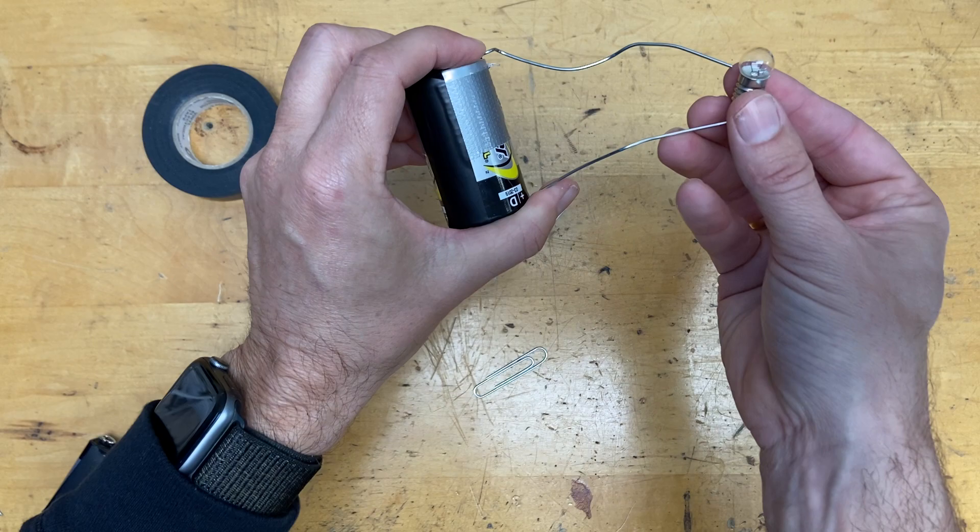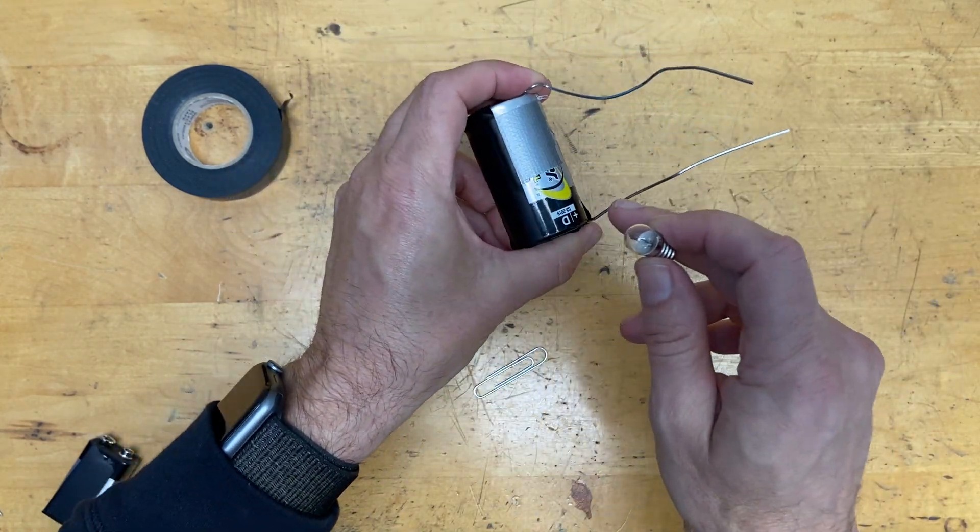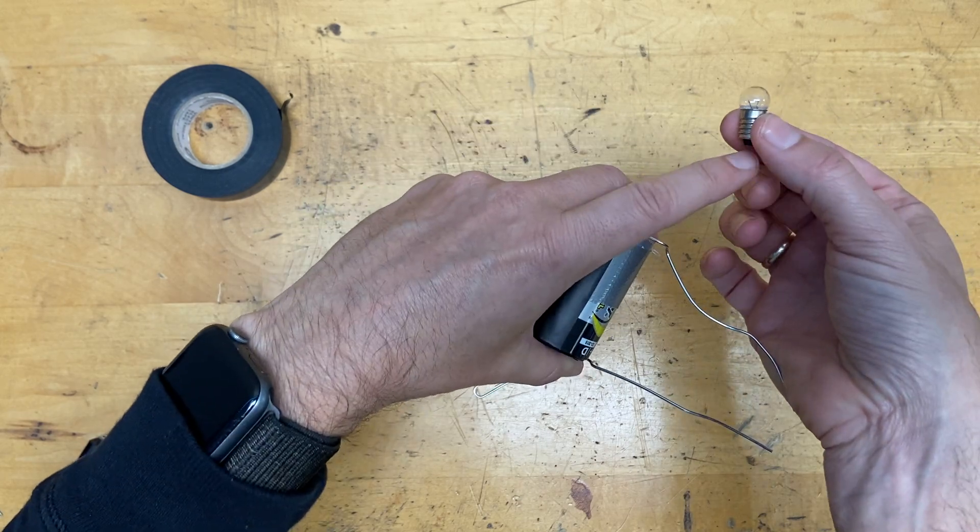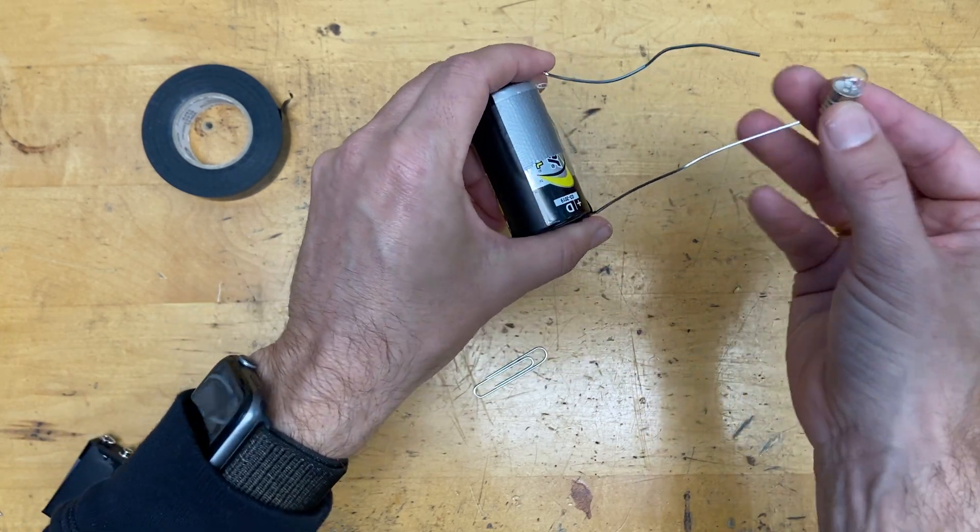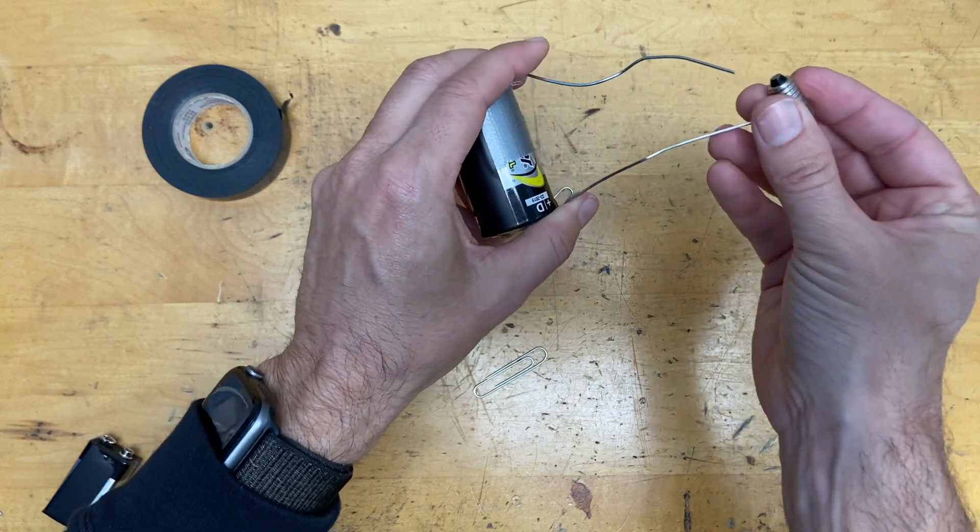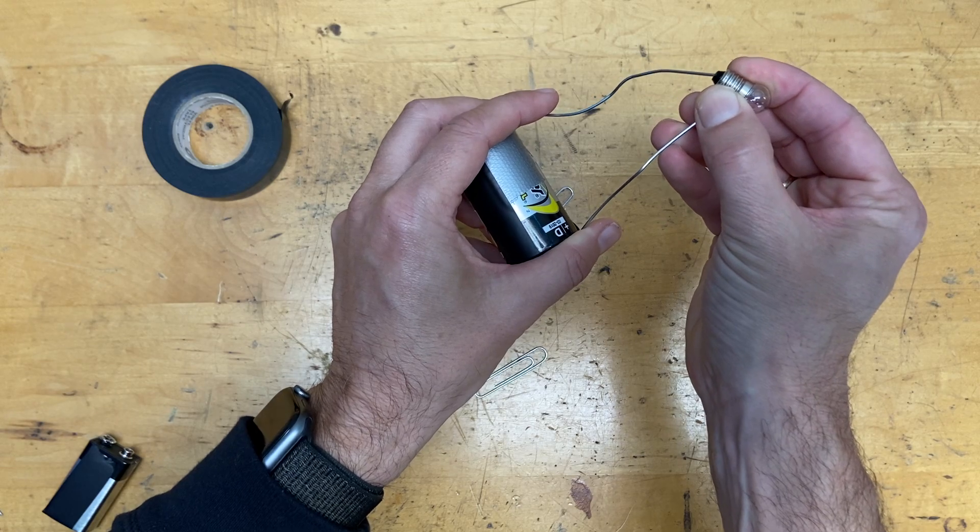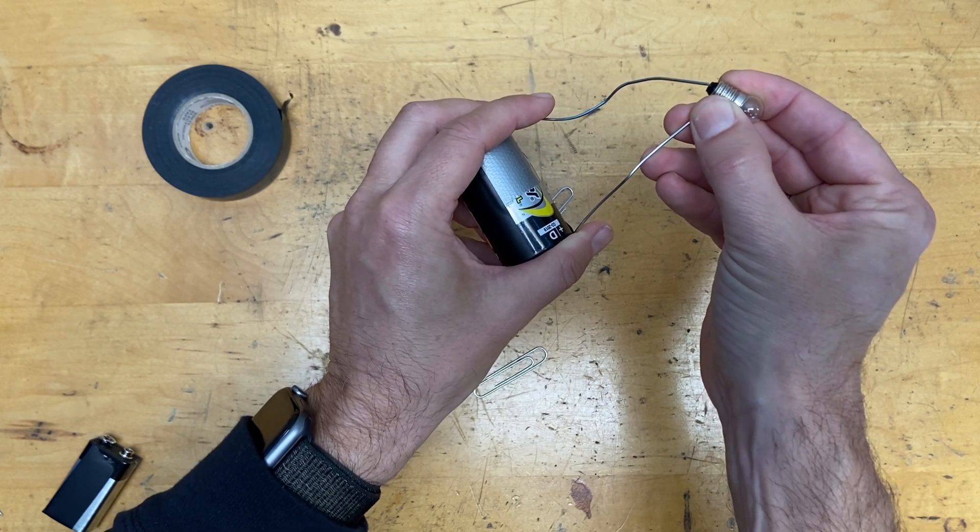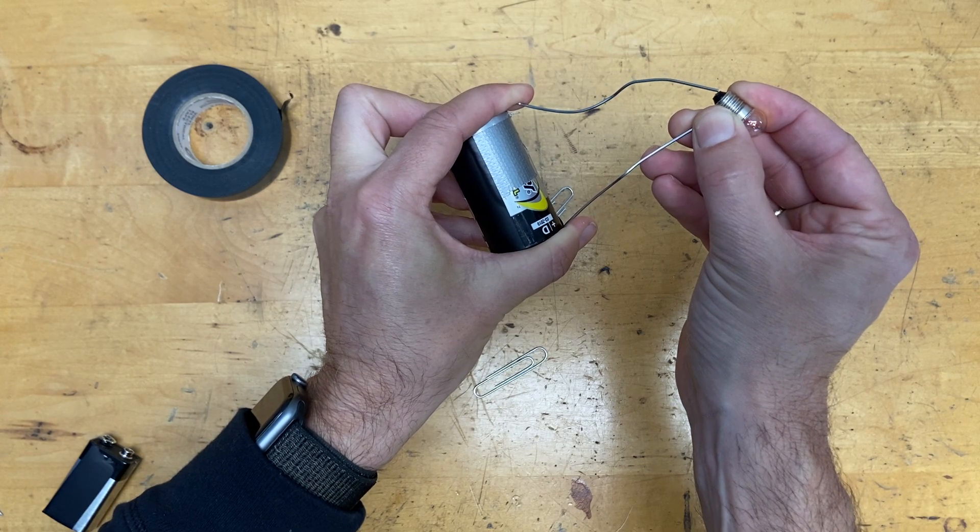So you need a complete circuit in order for the bulb to light. Current has to come out of one end of the battery through the bottom through the filament back to the side and back to the other end of the battery. It doesn't matter which way you do it. These kind of light bulbs work either way and then I also have seen there you go.